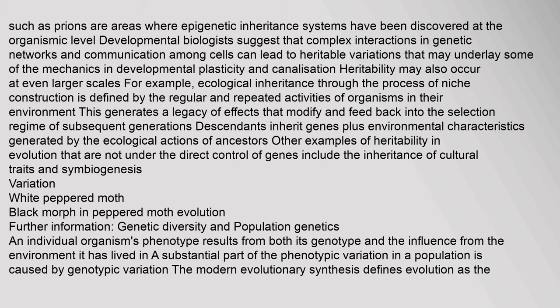Heritability may also occur at even larger scales. For example, ecological inheritance through the process of niche construction — defined by the regular and repeated activities of organisms in their environment — generates a legacy of effects that modify and feed back into the selection regime of subsequent generations. Descendants inherit genes plus environmental characteristics generated by the ecological actions of ancestors. Other examples include the inheritance of cultural traits and symbiogenesis.